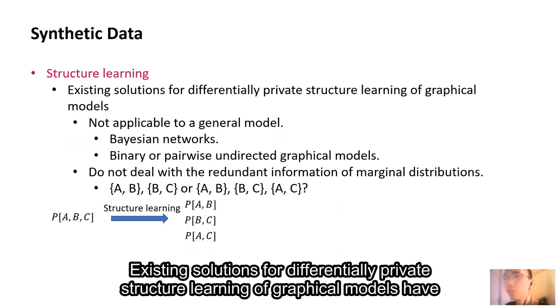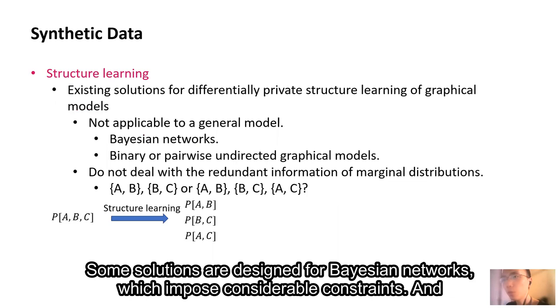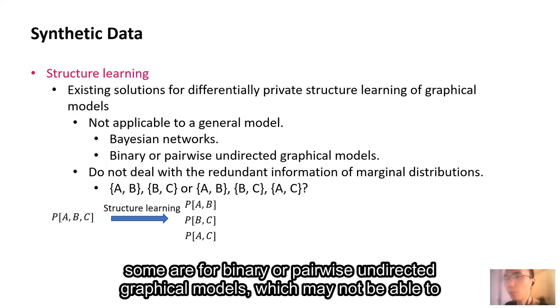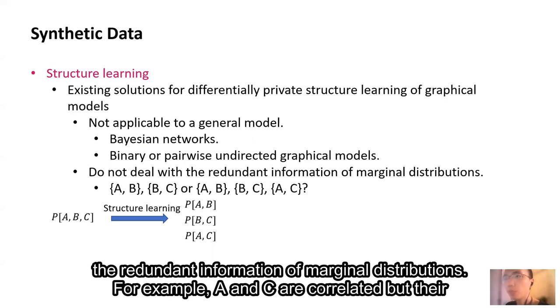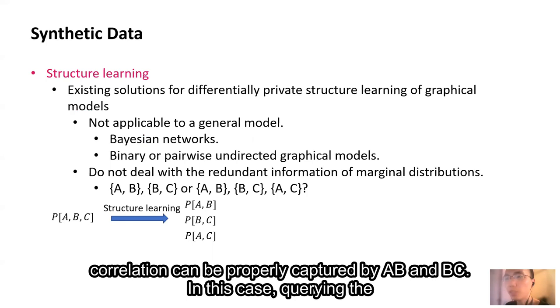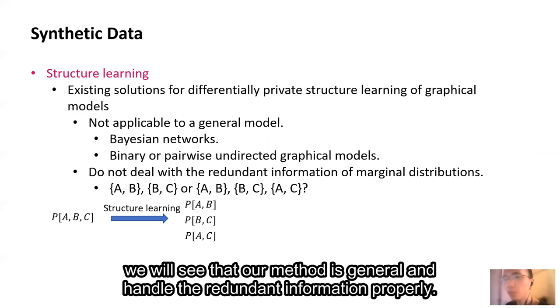Existing solutions for differentially private structure learning of graphical models have some limitations. Here are two main drawbacks. None of them is applicable to a general model. Some solutions are designed for Bayesian networks, which impose considerable constraints. And some are for binary or pairwise undirected graphical models, which may not be able to model the data properly. In addition, many state-of-the-art solutions do not deal with the redundant information of marginal distributions. For example, A and C are correlated, but their correlation can be properly captured by AB and BC. In this case, querying the marginal distribution of AC is unnecessary and leads to more privacy leakage. Later, we will see that our method is general and handles the redundant information properly.